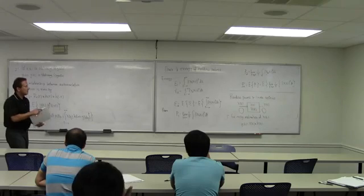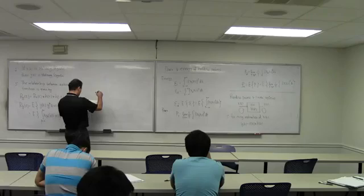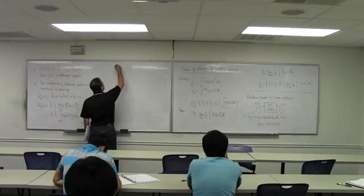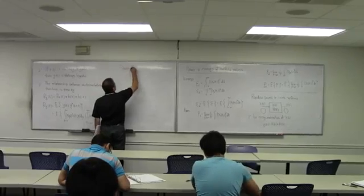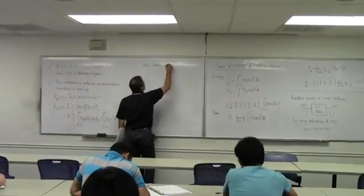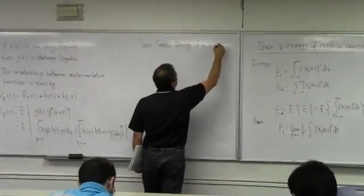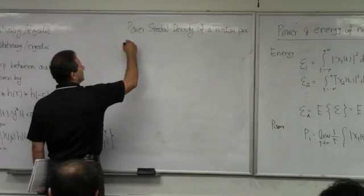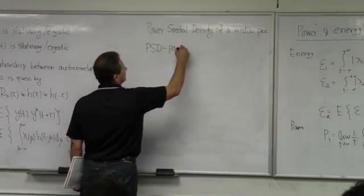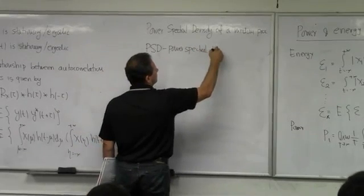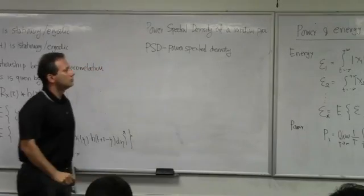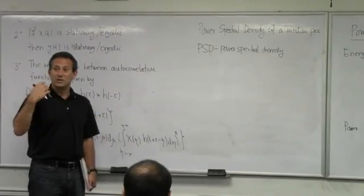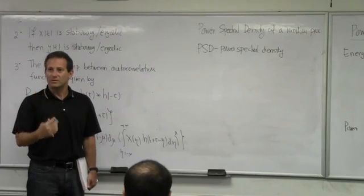So how do I define the frequency domain representation of the random process? We're going to define a quantity that is called power spectral density — PSD — of a random process. This is going to be our representation of the random process in the frequency domain. Let me formally define it and then tell you intuitively how you should understand it — what is the meaning of this power spectral density?